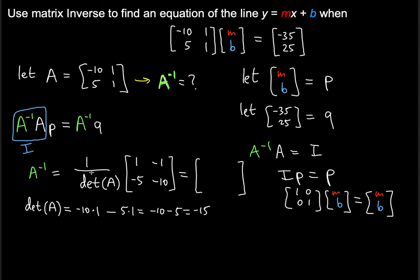A constant will apply to every single entry in this matrix. So negative 1 over 15 will be applied to every one of these entries. 1 times negative 1 over 15 is negative 1 over 15. Negative 5 times negative 1 over 15 is positive 1 third. This one is positive 1 over 15. And negative 10 divided by negative 15 is 10 over 15, which is 2 thirds.